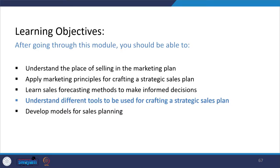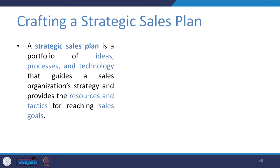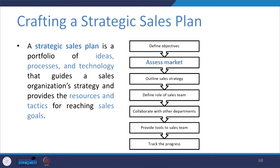As we have now learned about the different sales forecasting methods to make informed decisions when it comes to selling, let us understand some more tools that can be used for crafting a strategic sales plan. Before that, let us quickly revise the definition of strategic sales plan. A strategic sales plan is a portfolio of ideas, processes and technologies that guides a sales organization strategy and provides the resources and tactics for reaching sales goals. We also discussed the various steps involved in designing a strategic sales plan, and after defining the objectives we were looking at how to assess the market — we have already covered different sales forecasting methods.